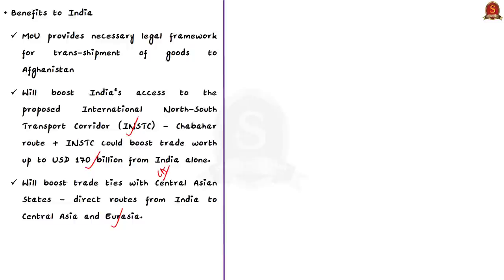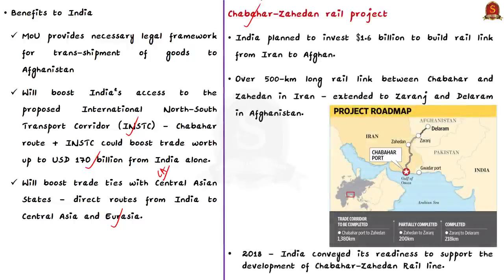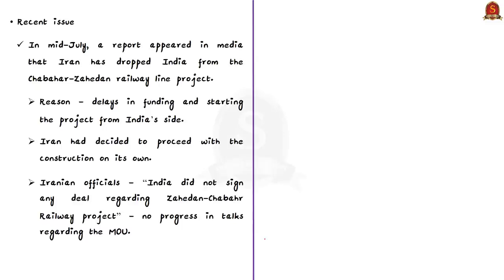For the same reason, the Chabahar-Zahedan rail project is also significant. In addition to the development of Chabahar port, India also planned to build a rail link from Iran to Afghanistan — the Chabahar-Zahedan rail project. It is over 500 kilometers long, linking Chabahar port and Zahedan at the Iran-Afghanistan border, and will be extended to Zaranj and Delaram in Afghanistan. Another MOU was signed between India and Iran in 2016 for construction of this rail project. By 2018, India conveyed its readiness to support the development of this rail link. But in July, reports appeared stating that Iran had dropped India from the Chabahar-Zahedan railway line project, citing delay in funding from India's side.